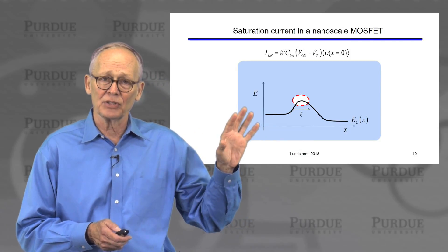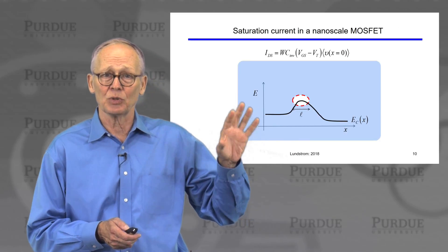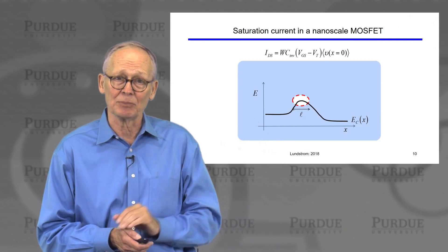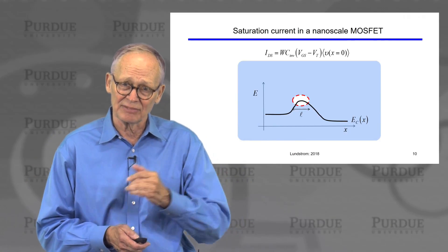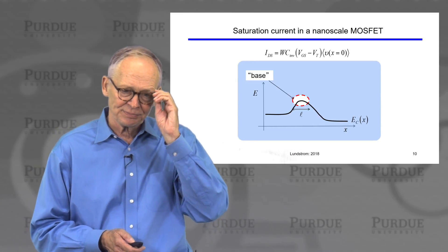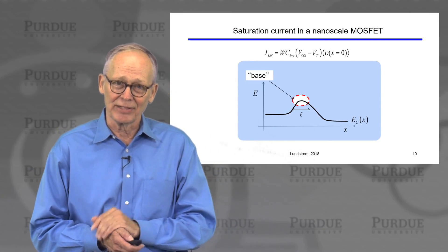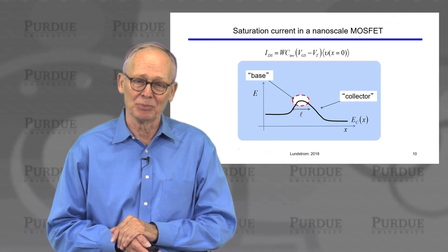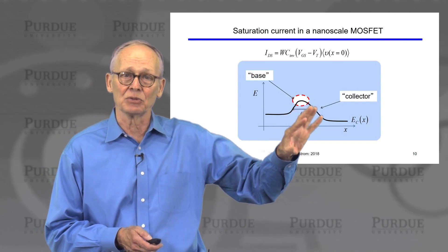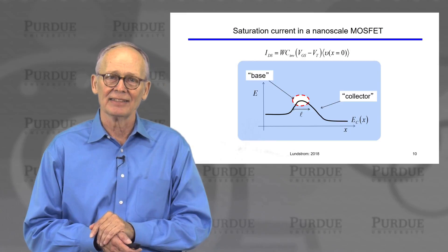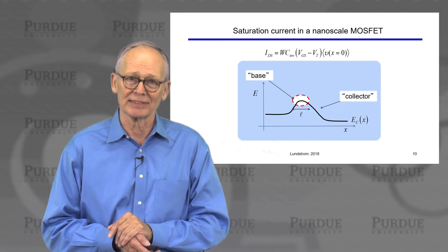And for those of you that are familiar with bipolar transistors, this will look something like the base of a bipolar transistor, where electrons have to diffuse across a base. So if it helps, you can think of that as the base of a bipolar transistor.